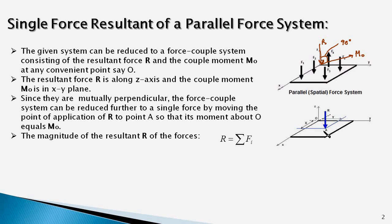The magnitude of the resultant can be determined by summing the individual forces, which are all parallel to the Z axis. So, we have the equation R equals sigma F.